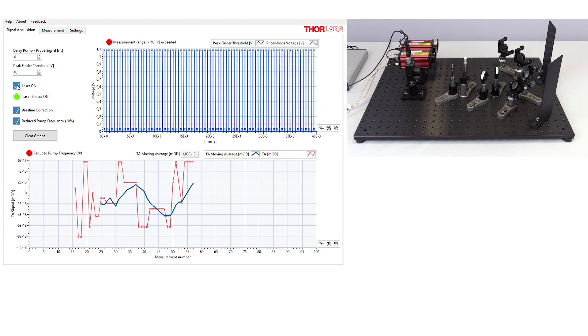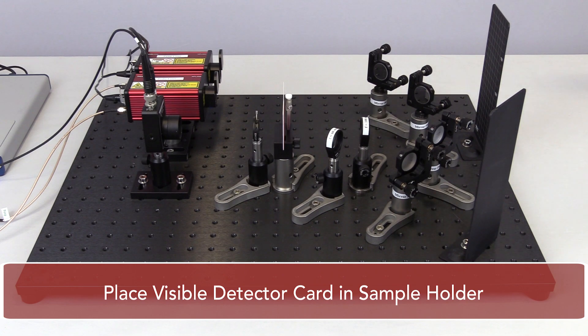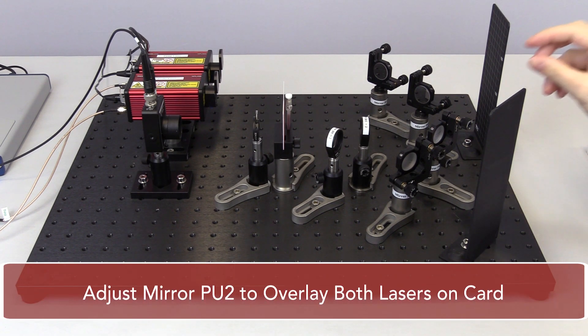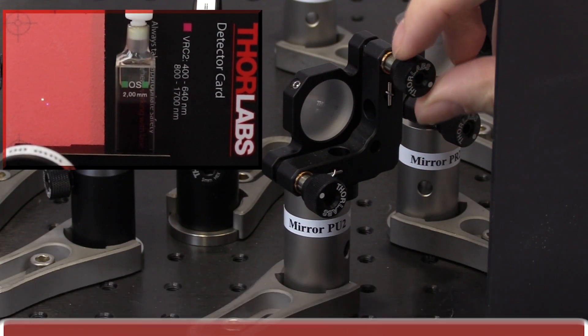To help view the beam positions, place the VRC2 visible detector card in the card slot of the sample holder. Then, use the mirror mount adjustment knobs to overlap the green pump laser beam with the probe laser beam.